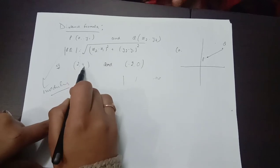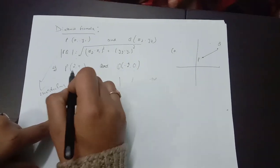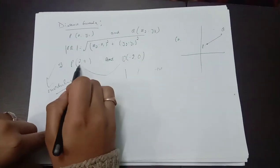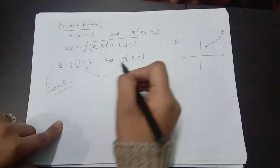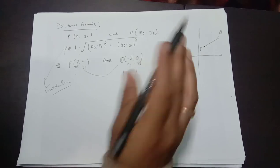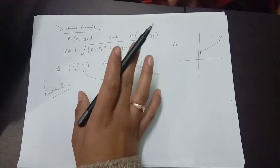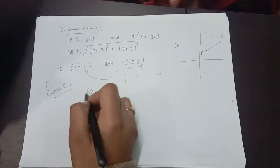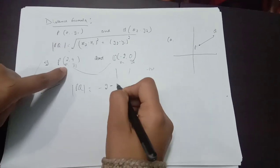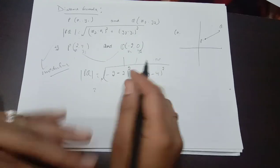For example, we have two points: P is (2, 4) and Q is (−2, 0). Assigning x1 = 2, y1 = 4, x2 = −2, y2 = 0, we put the values into the formula: √((−2 − 2)² + (0 − 4)²). We can then solve this to find the distance between P and Q.